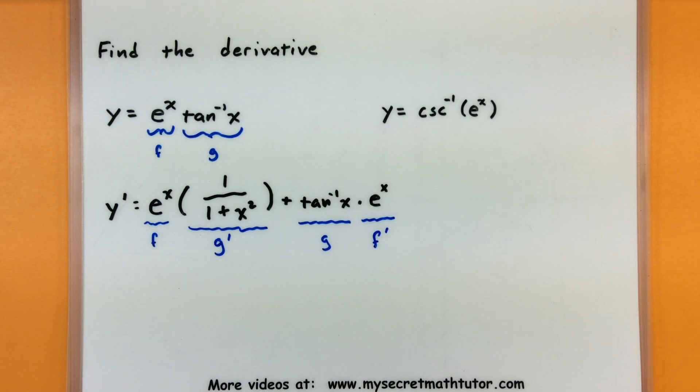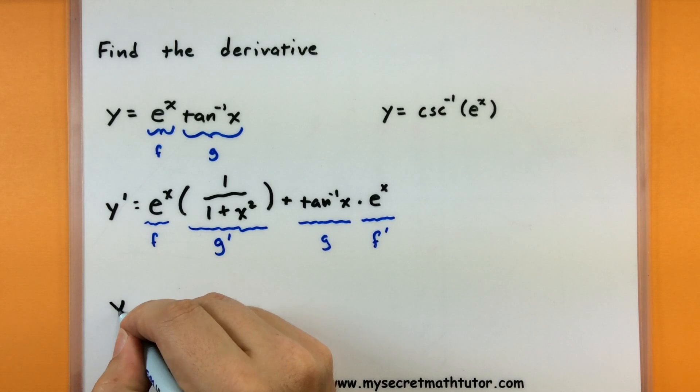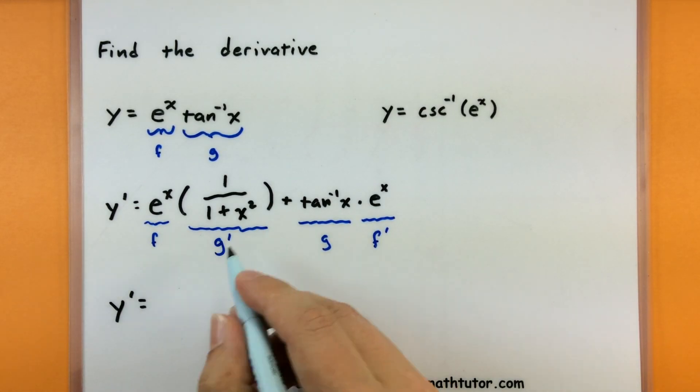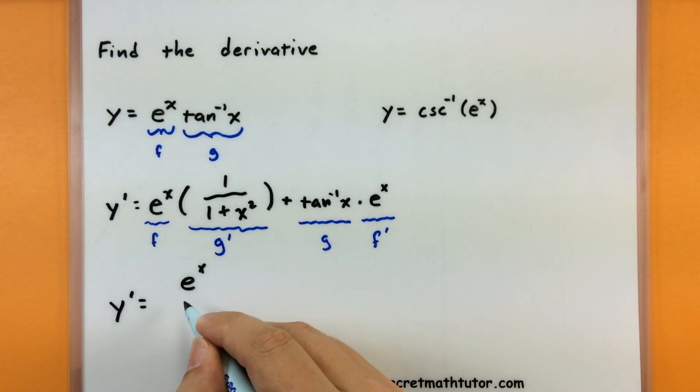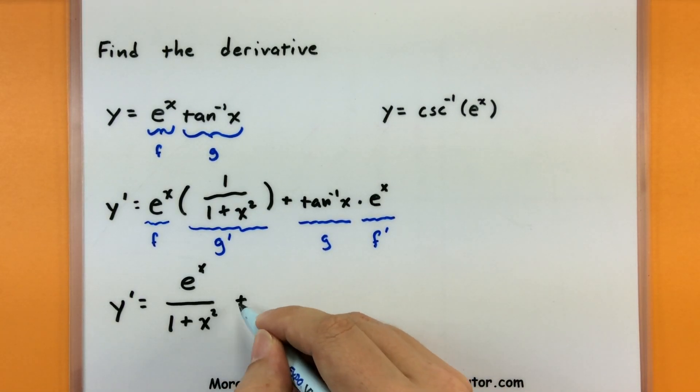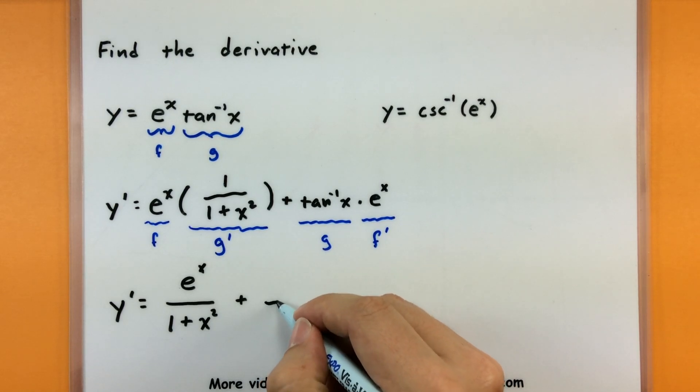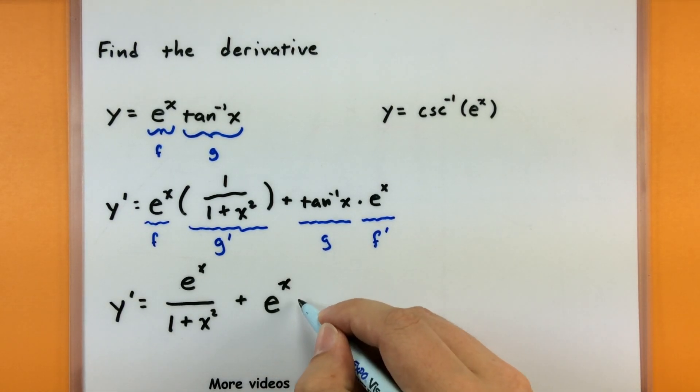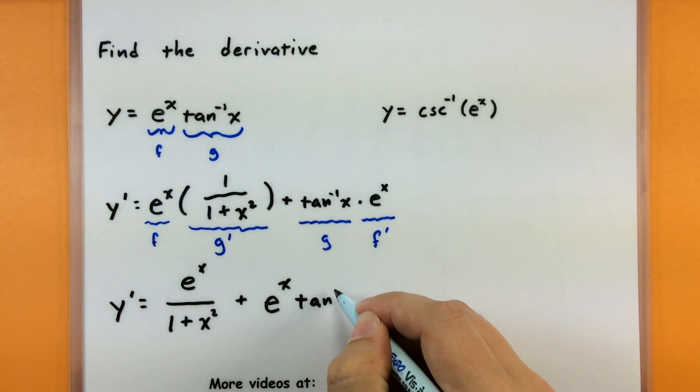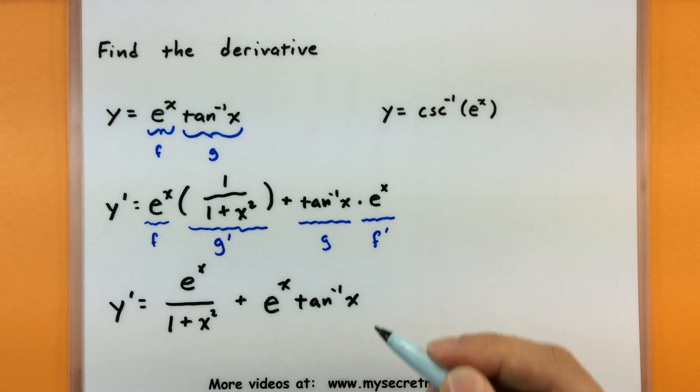Okay, so I have everything, it all looks good. Now we'll just go ahead and clean it up a bit. So y prime equals, let's throw that e to the x on top, why not, 1 plus x squared on the bottom, plus, I don't know, I like to put that e to the x in front of my inverse tangent, just to make sure everyone knows that it's not inside of the inverse tangent, it's really just being multiplied.